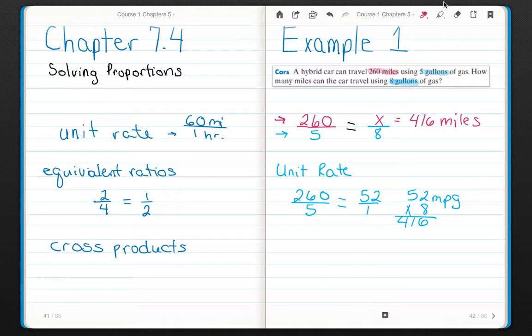Option two is I can use cross products. So 260 over five equals X over eight. So I'm going to cross multiply. 5X, five times X, equals 260 times eight. I'm going to cheat here for a minute, use the calculator. 260 times eight. You're going to work it out by hand. 2,080. Divide both by five to get X by itself.